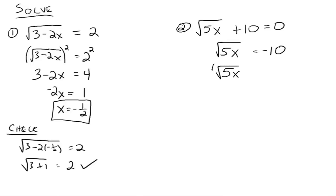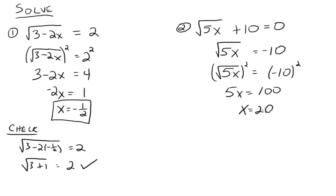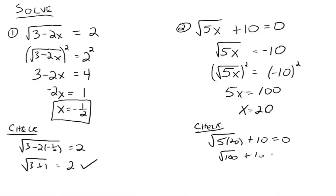Square both sides, and it would look like this. The left side just goes to 5x, the right side goes to 100, so x is 20. But check: 5 times 20 is 100, so we have the square root of 100 plus 10 equals 0. The square root of 100 is 10. 10 plus 10 does not equal 0, so it doesn't check.